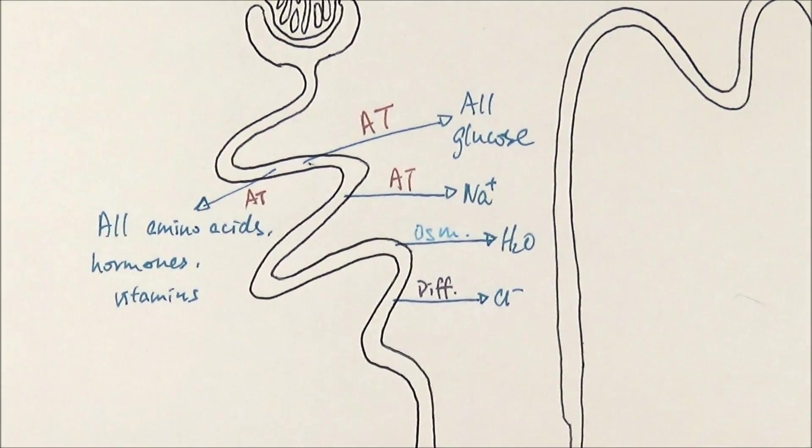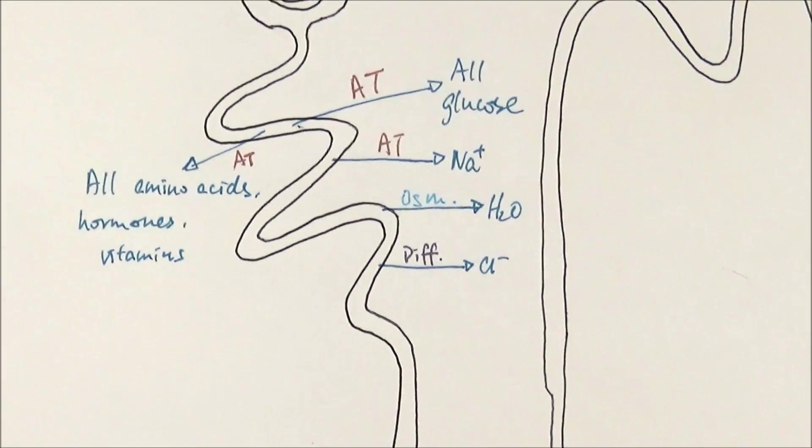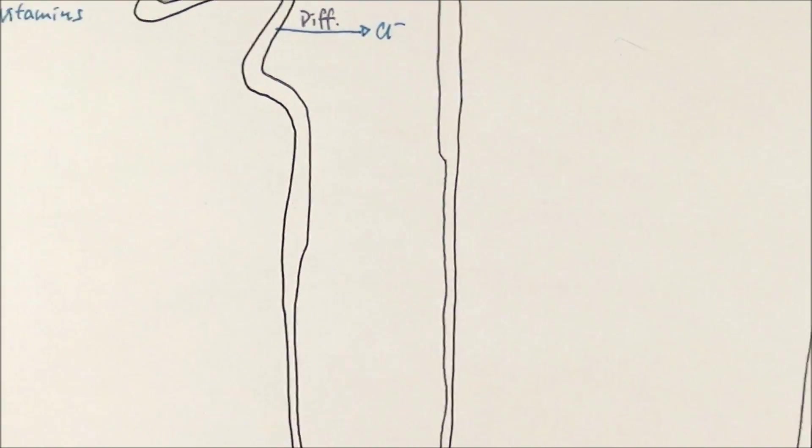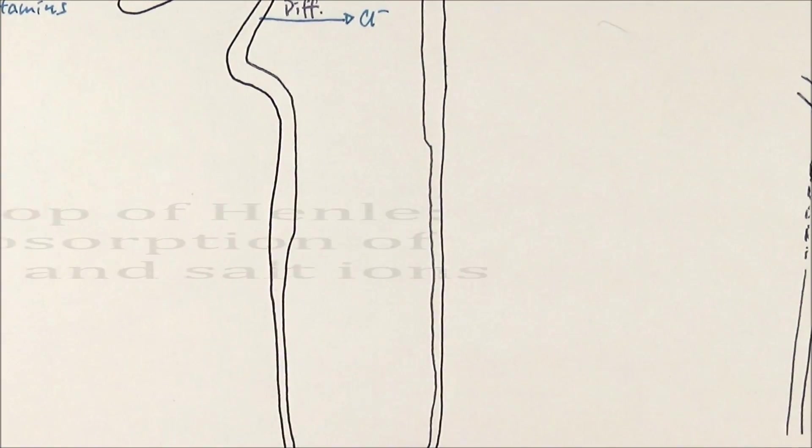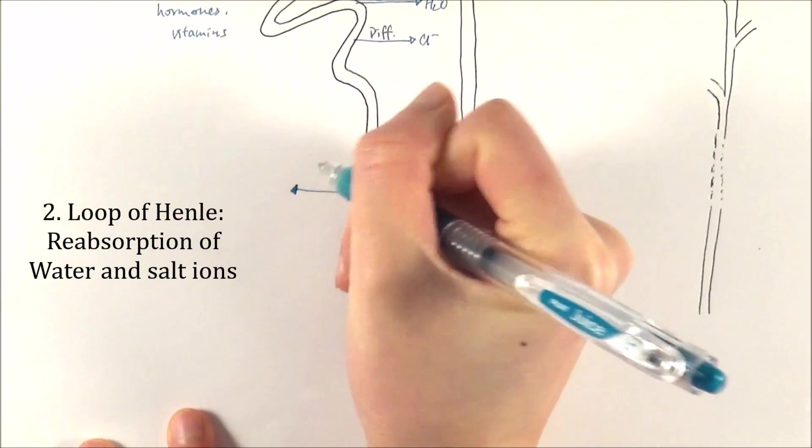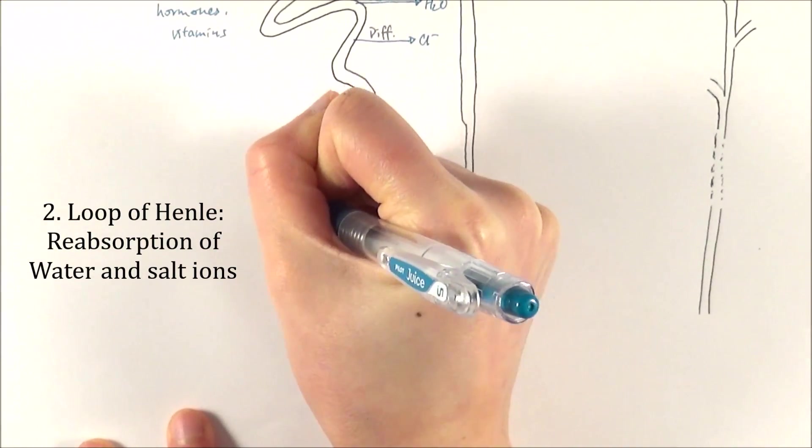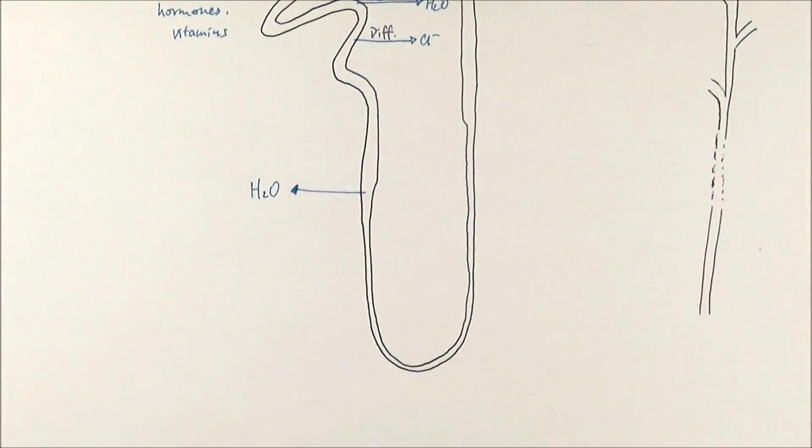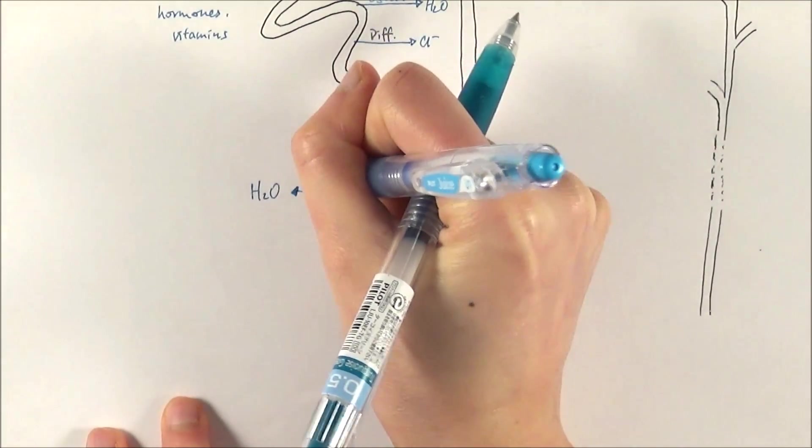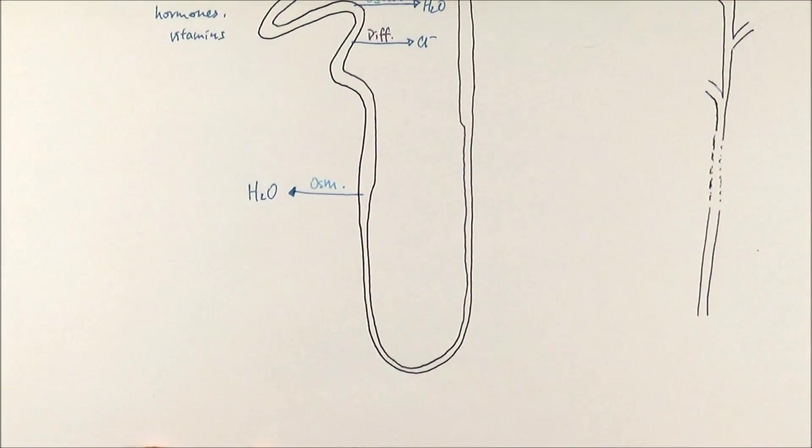After the selective reabsorption happening in the proximal convoluted tubule, the filtrate will continue to move into the loop of Henle. Now in the loop of Henle, the first thing that gets reabsorbed is water. And the same concept, whenever there is water movement, it's always going to be by the process of osmosis. Now here we need to consider the water potential and the concentration of ions here.